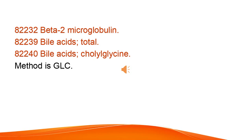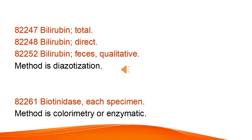Beta-2-microglobulin. Bile acids — total. Bile acids, cholylglycine: method is GLC. Bilirubin — total, direct, feces qualitative: method is diazitization. Biotinidase, each specimen: method is colorimetry or enzymatic.